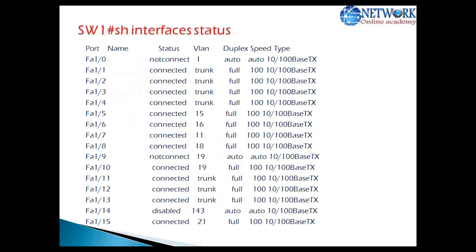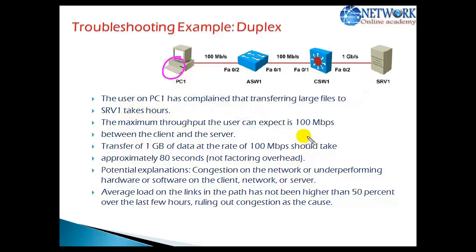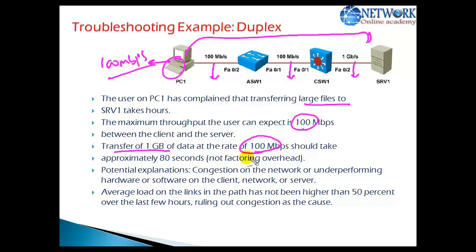Let us see what those things are. I have a simple scenario here — there is a user trying to access some server on a different switch on the same LAN. PC1 has been transferring a very large file, and the maximum throughput is 200 Mbps because the ports are 100 Mbps and 1 Gig. So he can easily send 100 Mbps of data within the LAN.